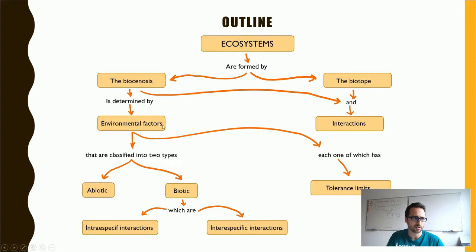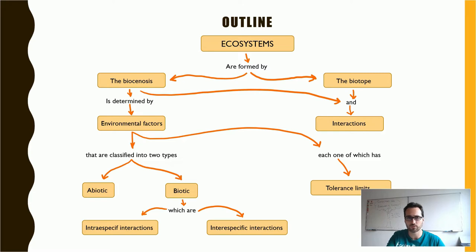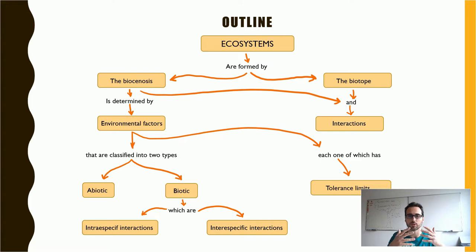These environmental factors can be classified into two types. The first type is abiotic: temperature, light, availability of water, oxygen dissolved in water — many kinds of factors. But sometimes they could be biotic. When we are considering biotic factors, we are talking about how the living beings interact with each other.